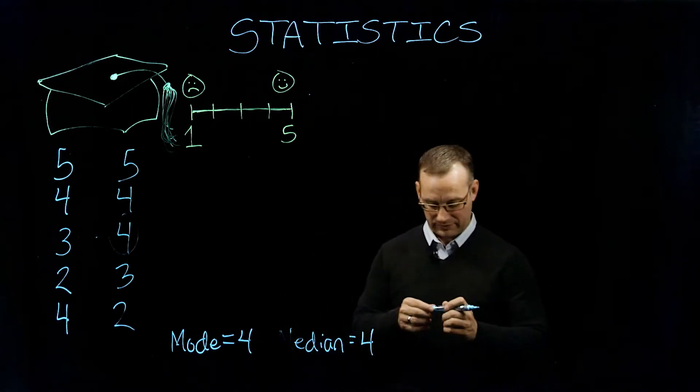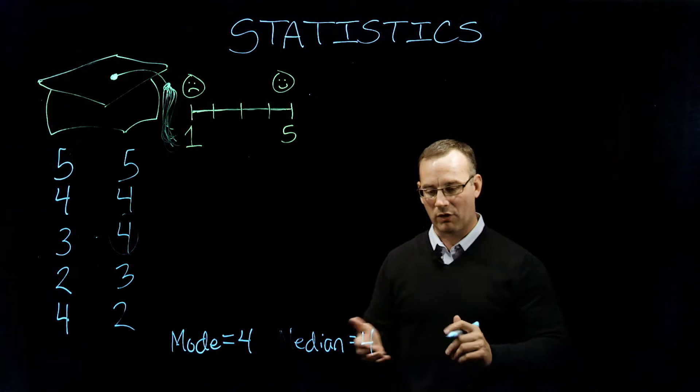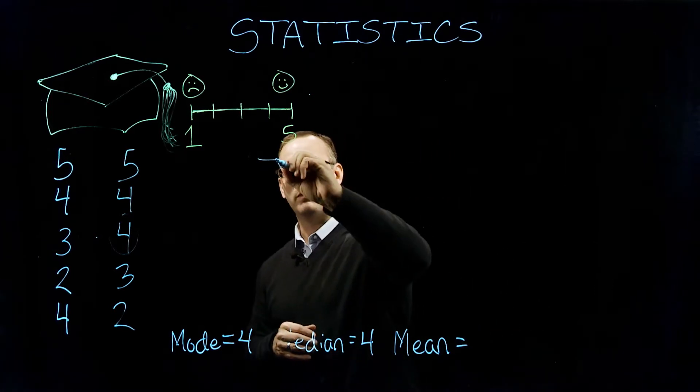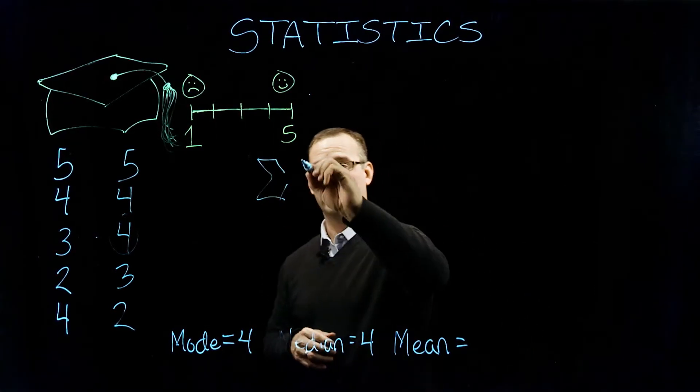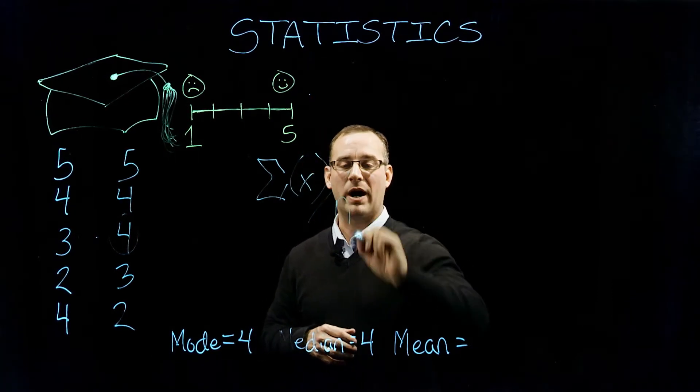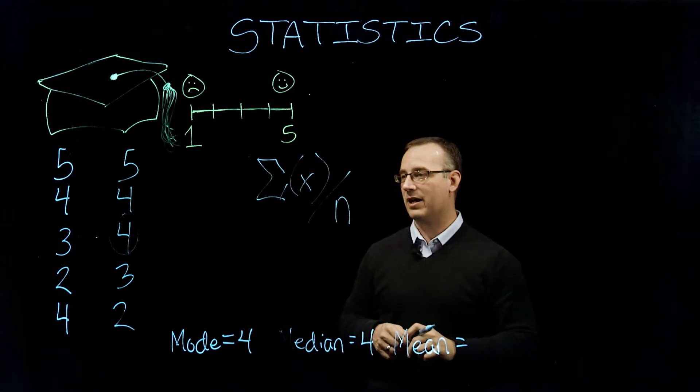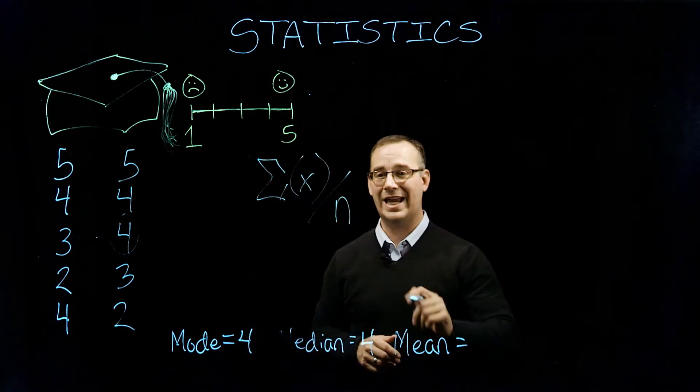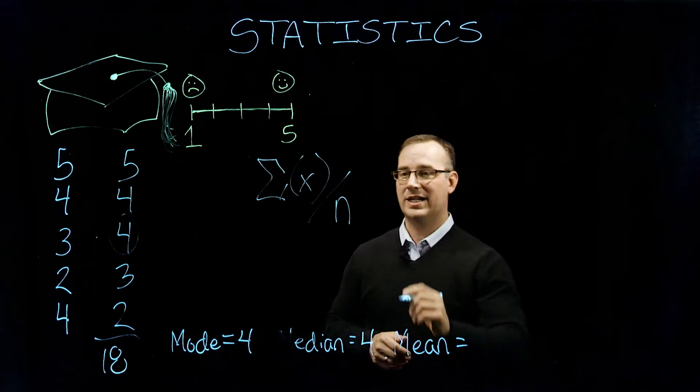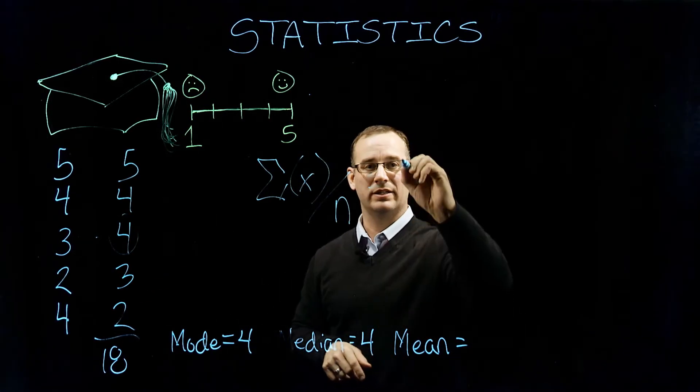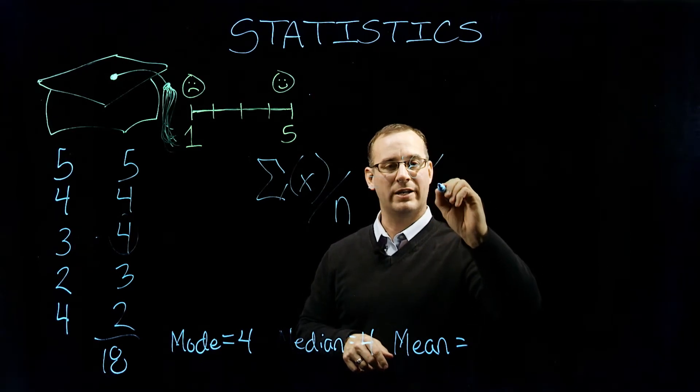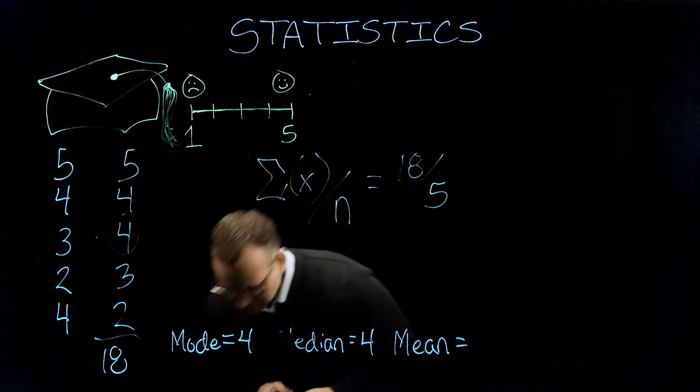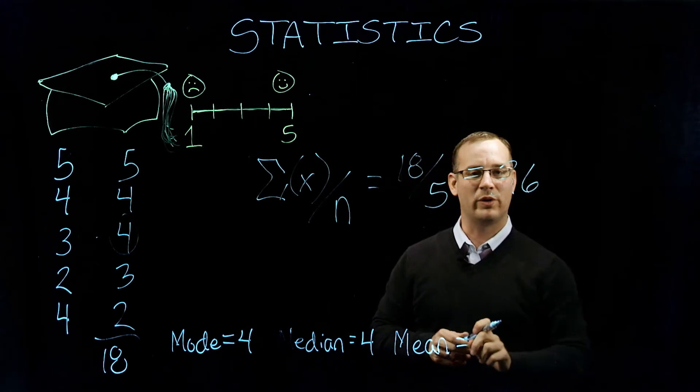And our last measure of central tendency that we're going to look at is our statistical average or our mean. So our mean, the formula for mean, what we're going to do is we're just going to get the sum of our x's divided by our n. So in this case, we need to add up 5 plus 4 plus 4 plus 3 plus 2. So we get 18. So our sum of our x's is going to be 18 divided by 5. And let me check my math. And we get 3.6.